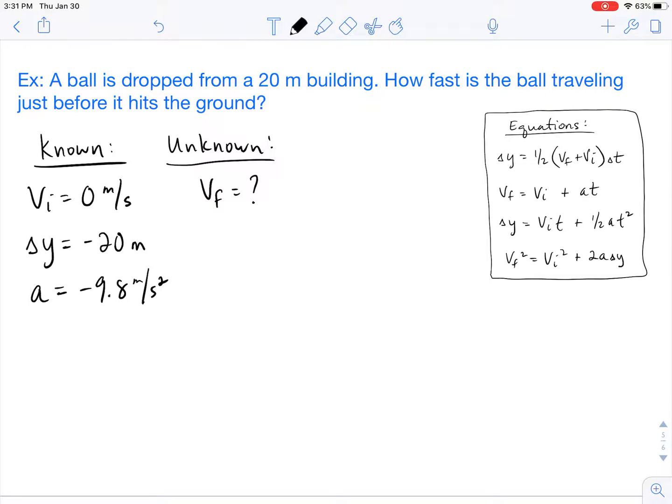So if you take a look at what we have, the only thing that's not even listed in our knowns and our unknowns is the time. They didn't give us time in this problem. So when you go to look at the equations, you're going to pick the equation that does not have time in it. And so for this problem, we're going to use this equation down here because time is not even listed in the equation.